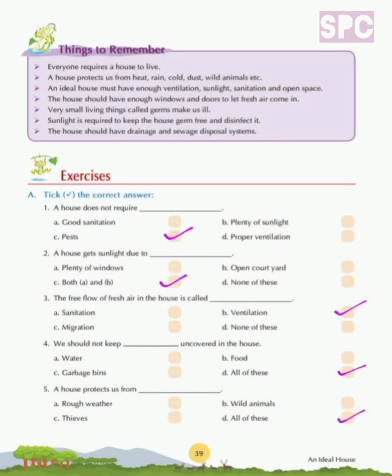Question 2: A house gets sunlight due to — plenty of windows, open courtyard, both A and B, or none of these. An open courtyard and plenty of windows both allow sunlight to brighten our homes. So here we will tick option C.